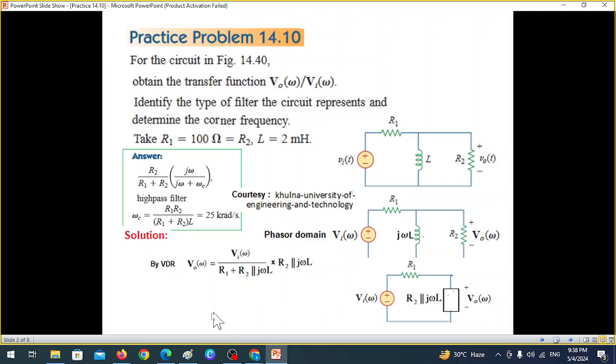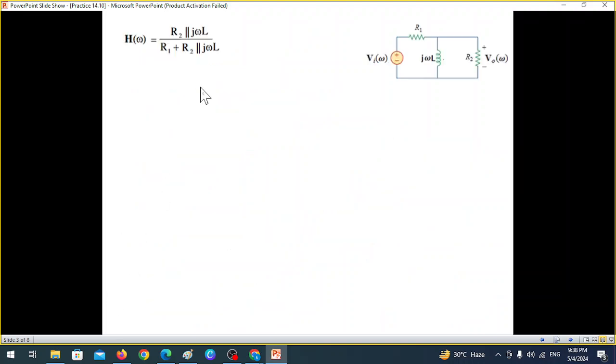this one, and multiply by the impedance across which we're trying to find, so multiply by this. Now, from here, we can find the transfer function H(ω), which is known as V_out over V_in. So if we bring this one down, then whatever is left is our answer. So this is R2 parallel jωL and divided by R1 plus R2 parallel jωL. But this is not the final answer. We have to keep in mind the answer given in the book is like this. So we'll try to match this.